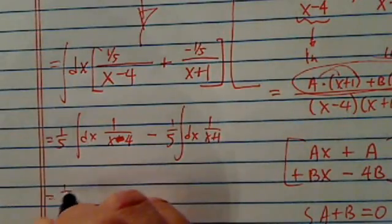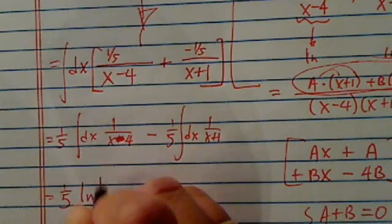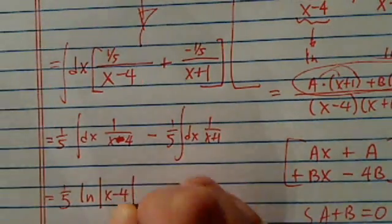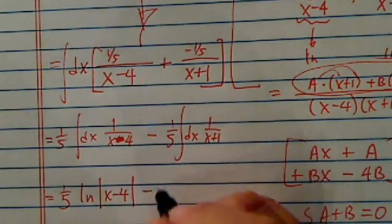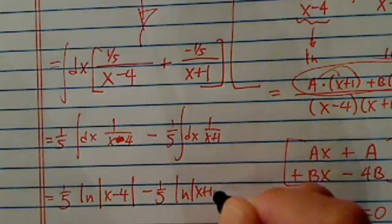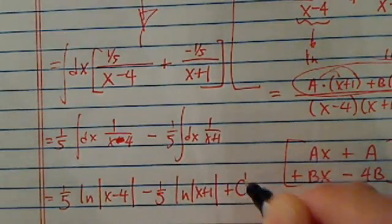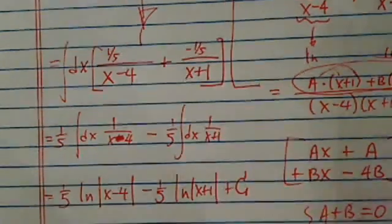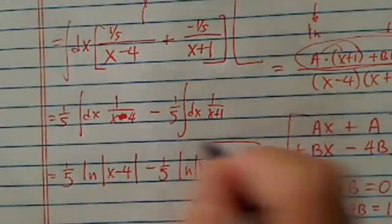From there, I have 1/5. This becomes natural log of x minus 4. Don't forget the absolute value sign. Minus 1/5 of the natural log of x plus 1. And add any constant to have it complete. And here is your answer.